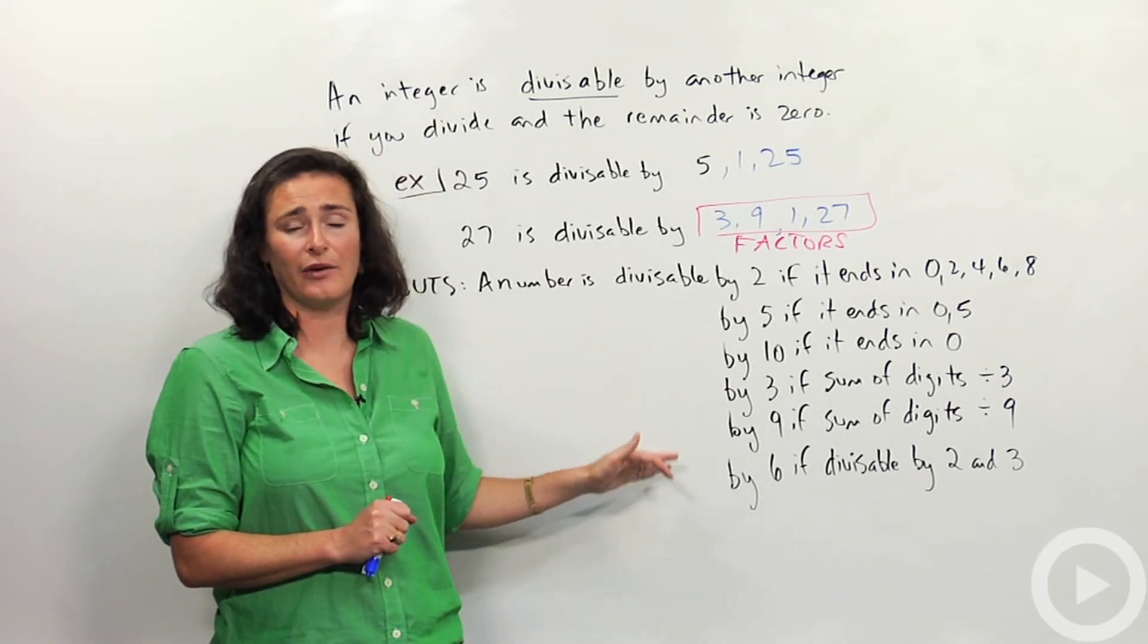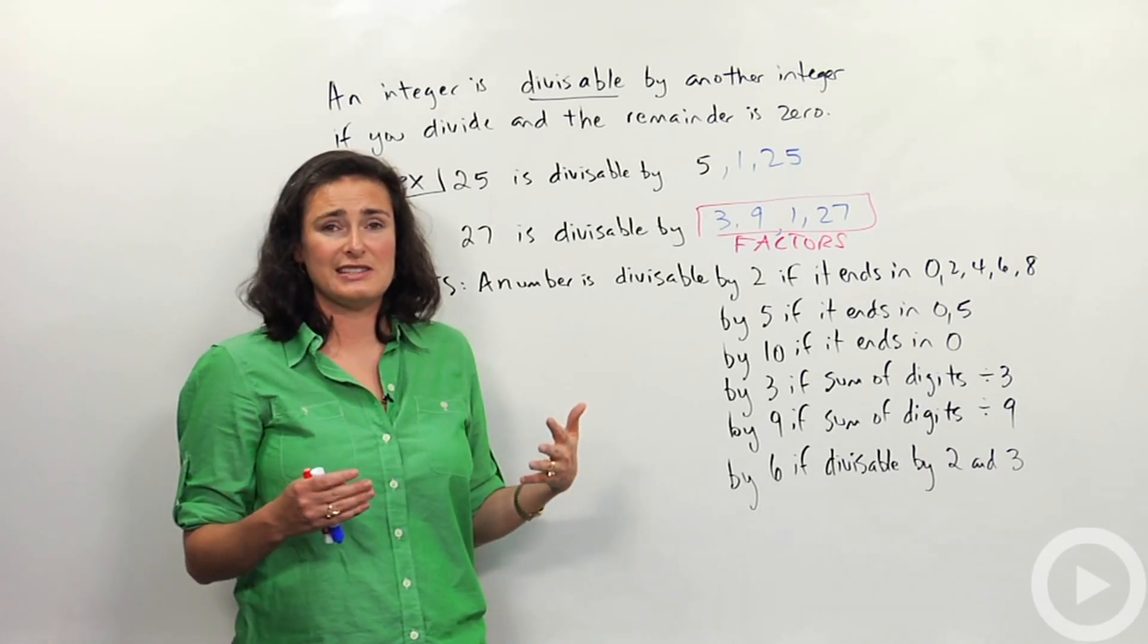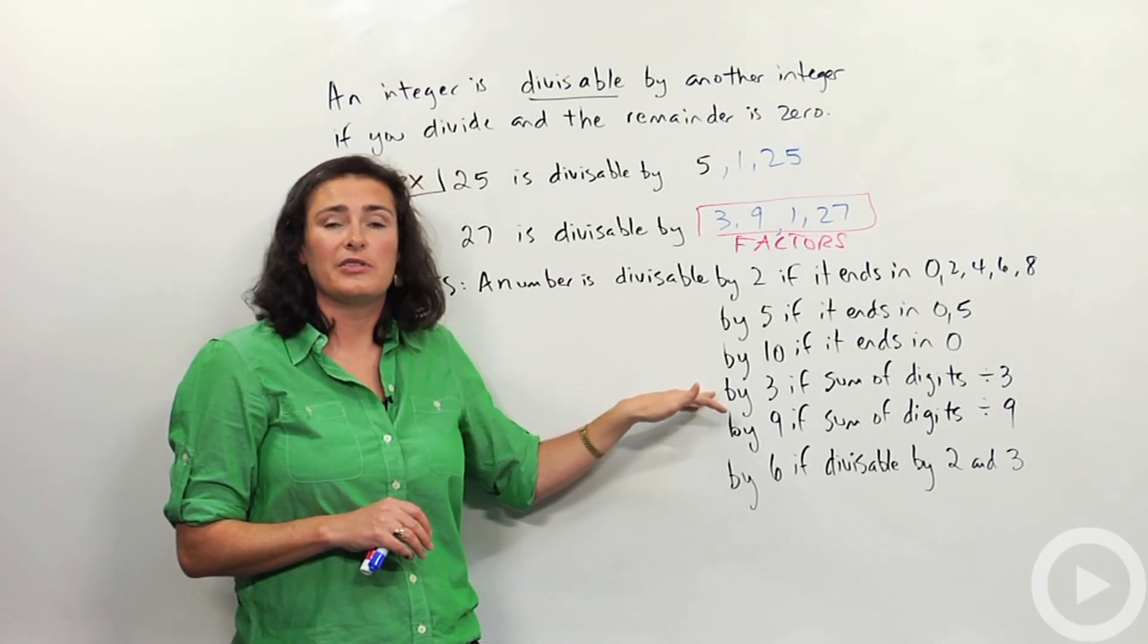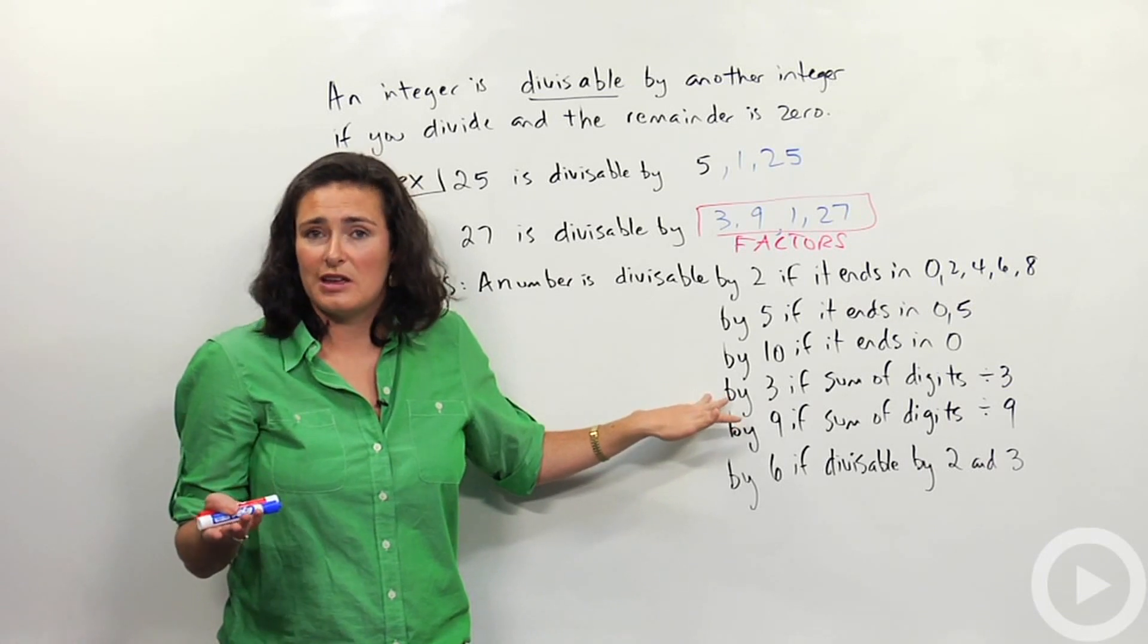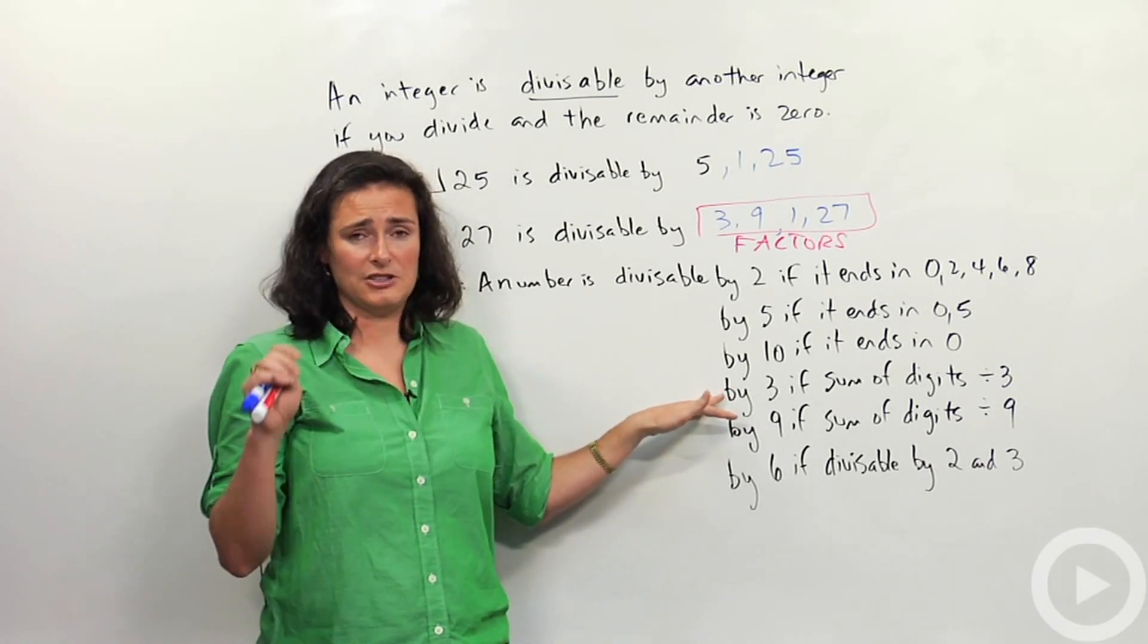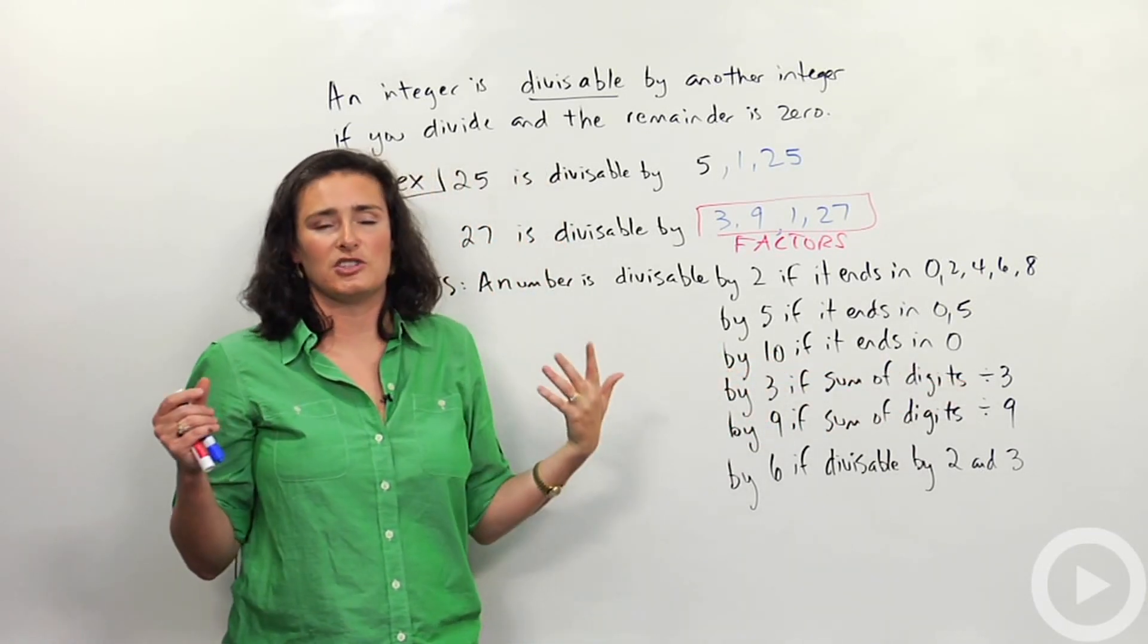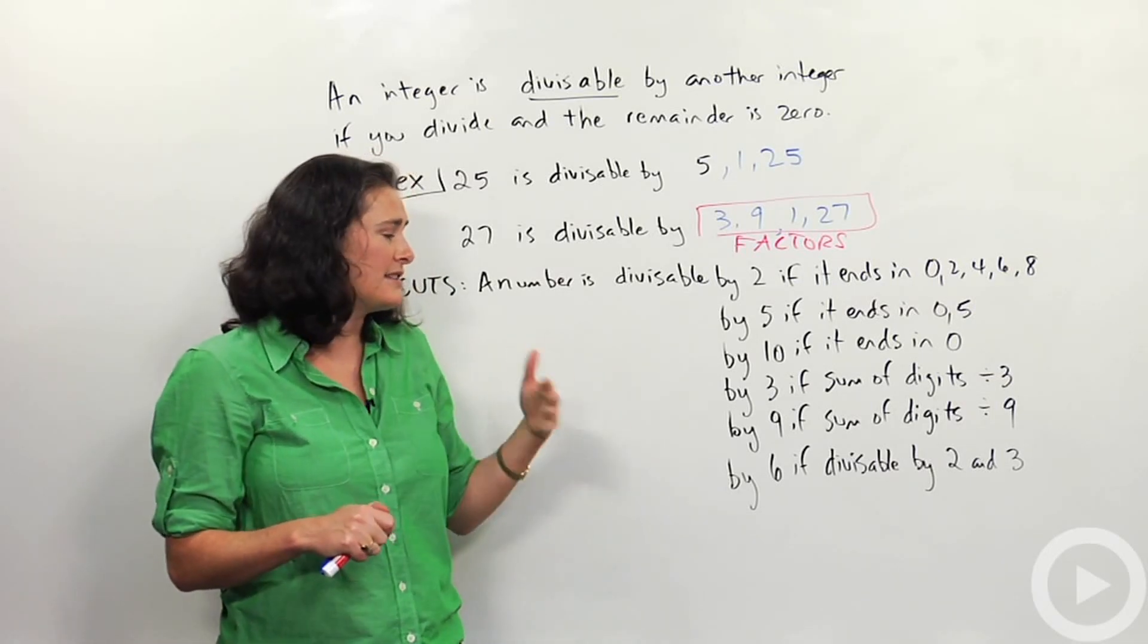Here's some that you may or may not know, and these are a little bit trickier. If you add up all the digits and that answer is divisible by 3, then that number itself is divisible by 3. So like the number 123 - if I add up 1 plus 2 plus 3, that's 6. 6 is divisible by 3, so yes, 123 is divisible by 3. We'll see some more in the next coming examples.